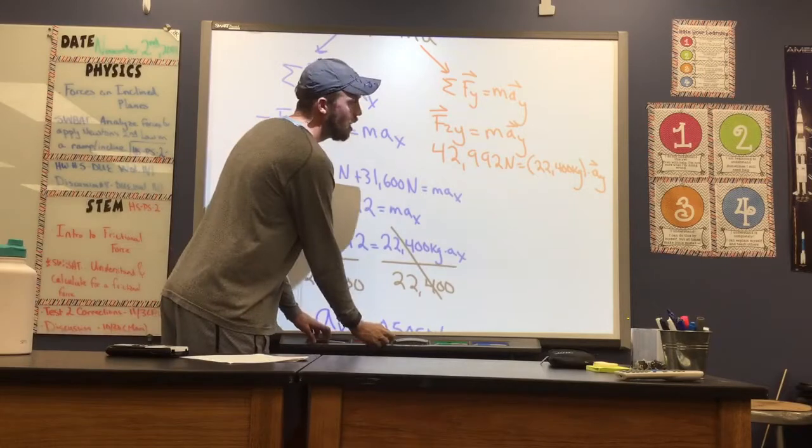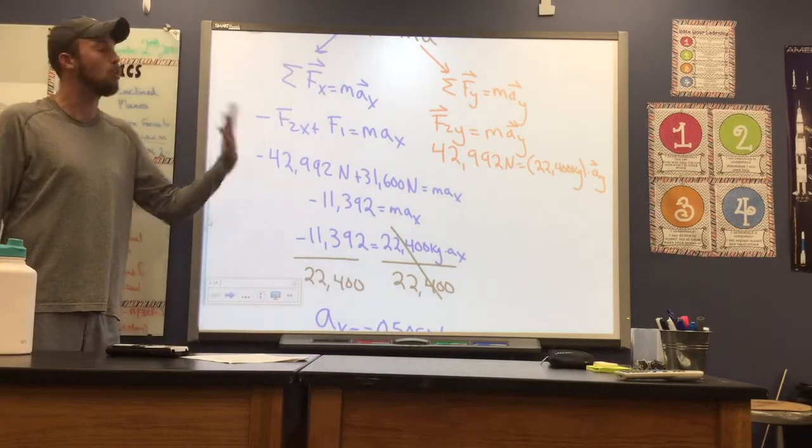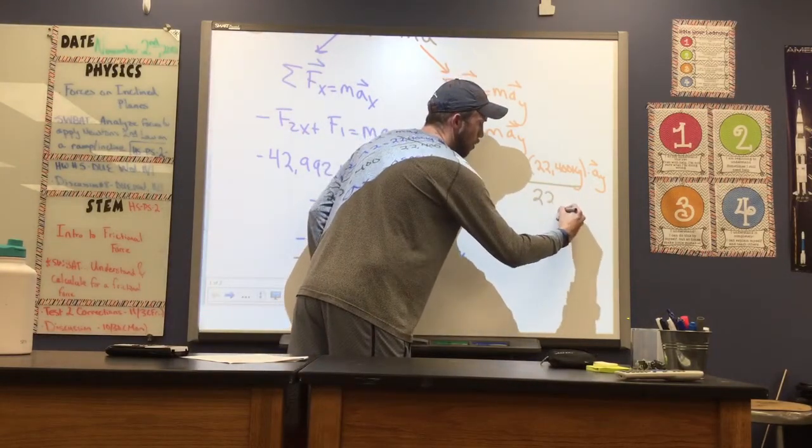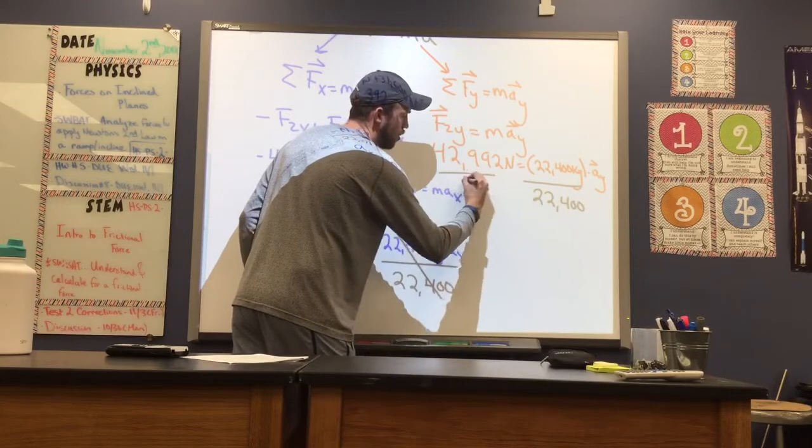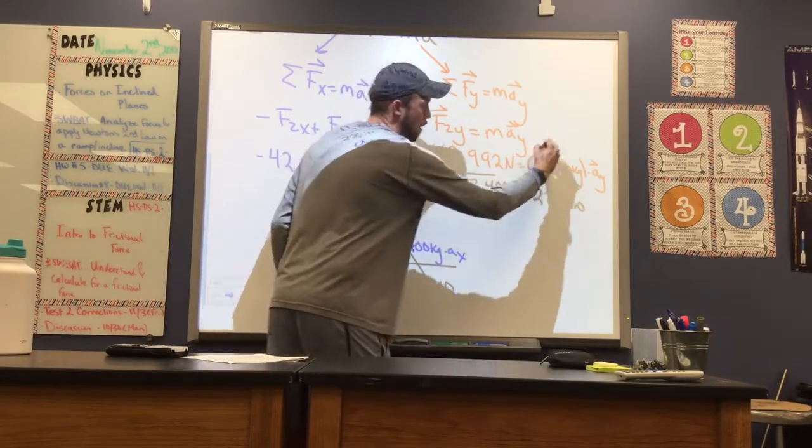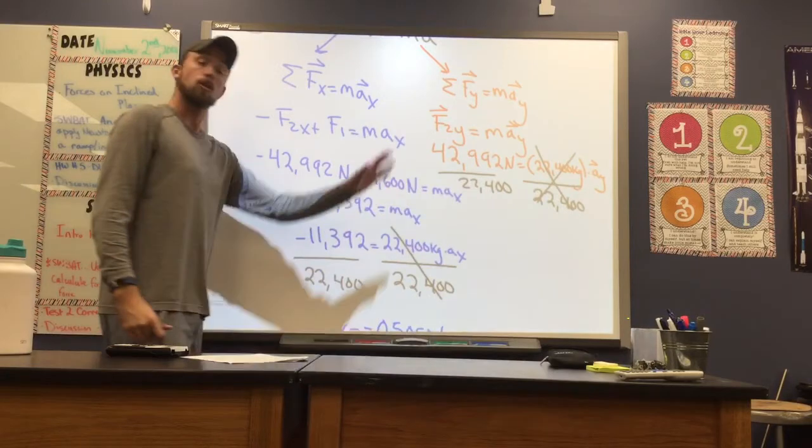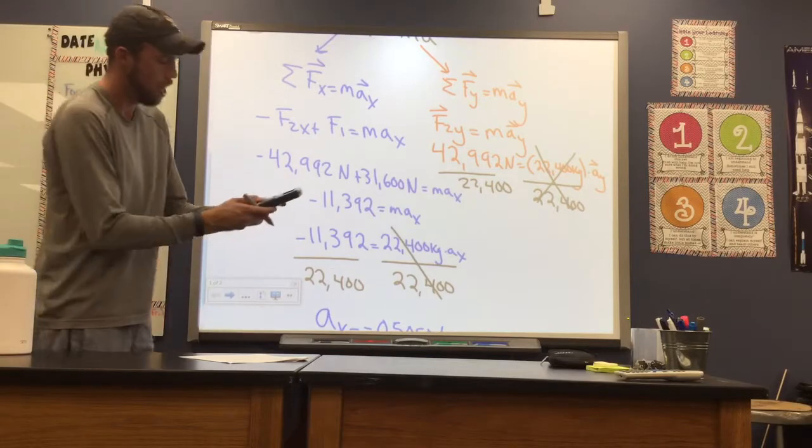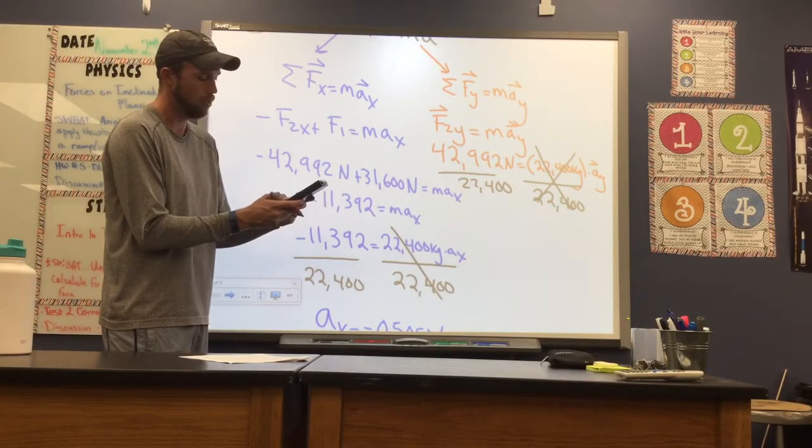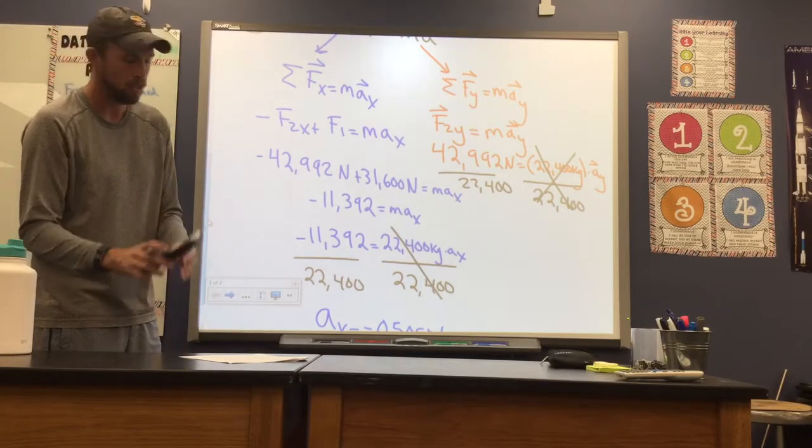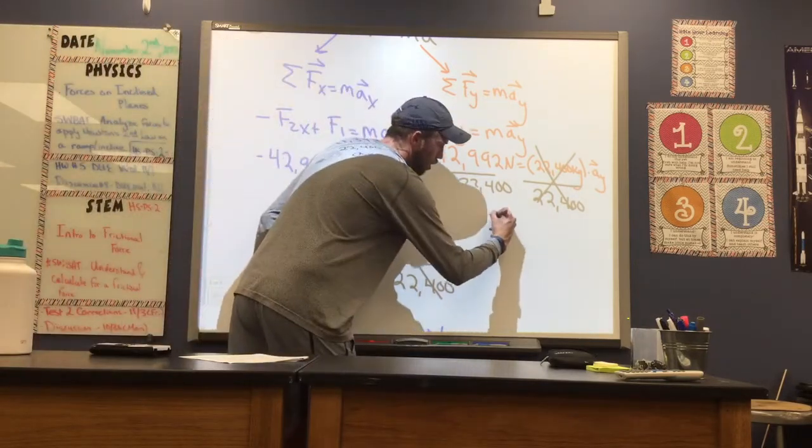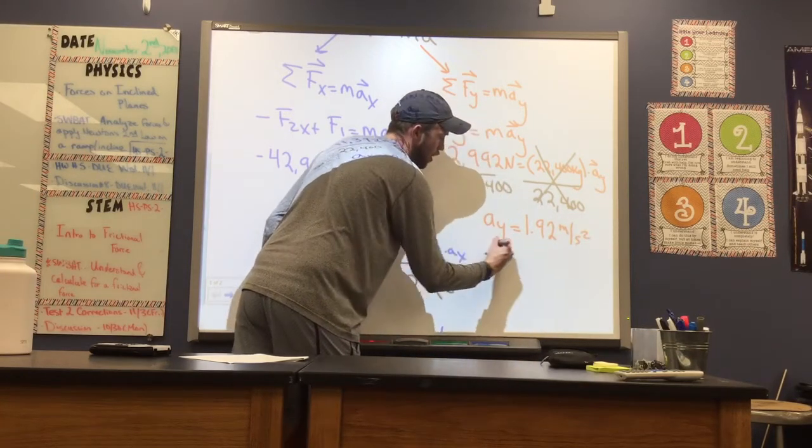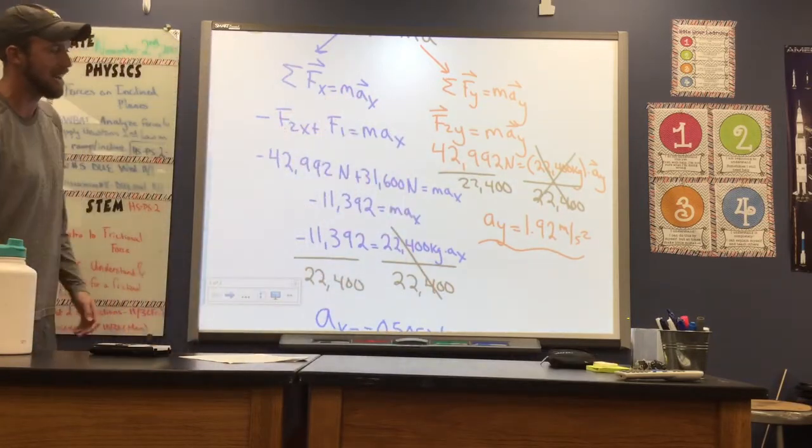So really similar to what we did previously, now to find my acceleration in the y direction, I'm going to divide our mass on both sides. So I'll divide by 22,400 on both sides of our equation. I'm getting a little bit cramped for space here, my apologies. The mass will cancel out on the right hand side. So I'm going to plug in our force, 42,992 divided by our mass, 22,400. And I'll get an acceleration in the y direction of about 1.92, our units for acceleration are meters per second squared, because we made sure to plug in newtons and a mass in kilograms.